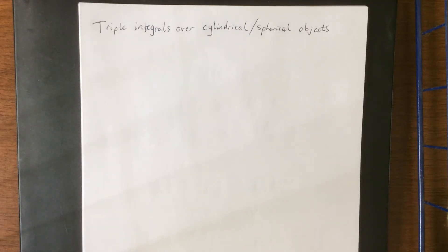In our last section we started evaluating triple integrals in Cartesian or rectangular coordinate systems. In this section I'd like to talk about triple integrals over cylindrical and spherical objects.